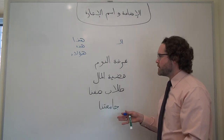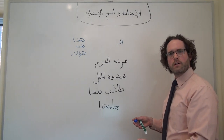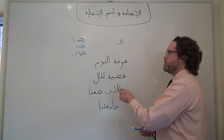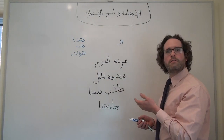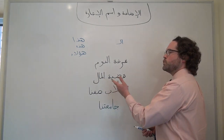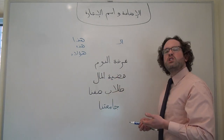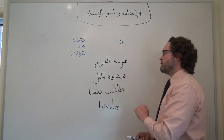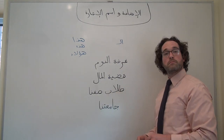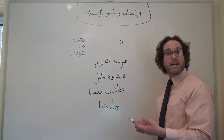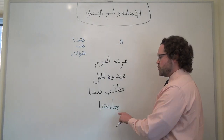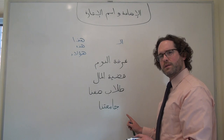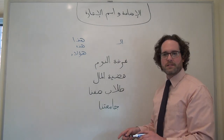Here I have a couple of simple إضافات that we can use. غرفة النوم — the bedroom, literally the room of sleep. قضية المال — the issue of money, this abstract issue of money. طلاب صفنا — the students of our class, or our class's students. And جامعتنا — we're going to talk about that last one a little more in a bit.